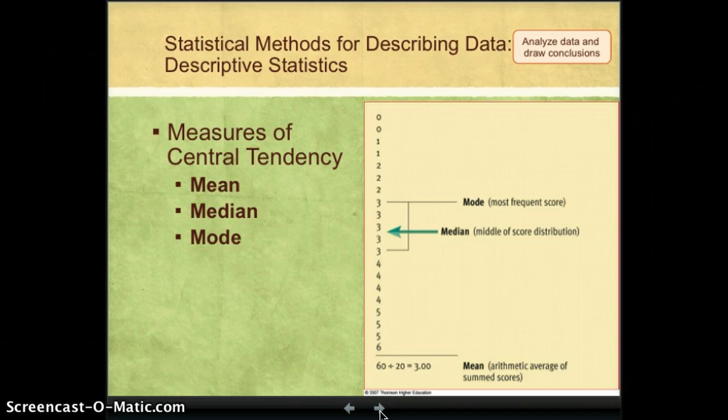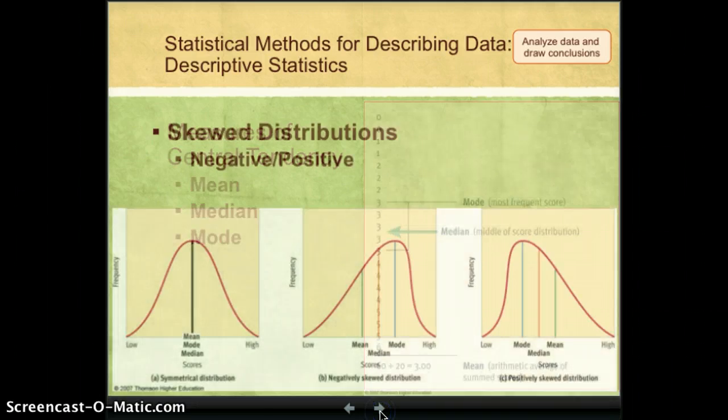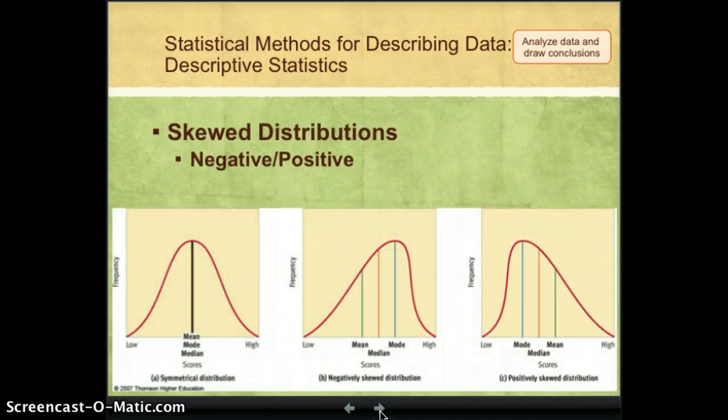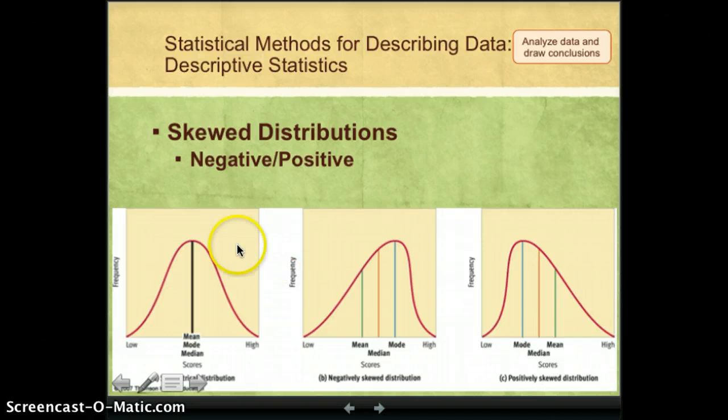Part of why these three measures of central tendency are important has to do with how a distribution of scores looks. So, the first example is of a perfectly symmetrical distribution. In this type of distribution, the mean, the median, and the mode are exactly the same. And what you see is that the two different halves of the polygon are mirror images of one another.